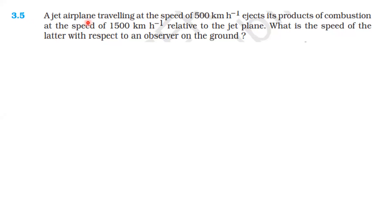A jet airplane traveling at the speed of 500 km per hour ejects its products of combustion at the speed of 1500 km per hour relative to the jet plane. What is the speed of the combustion products with respect to the observer on the ground?